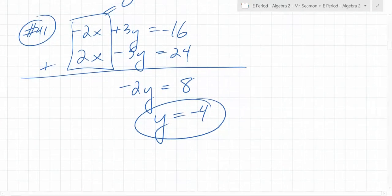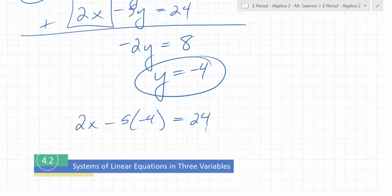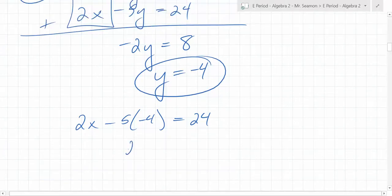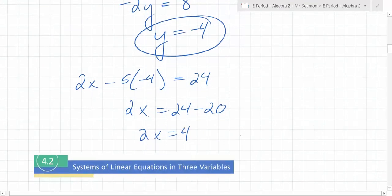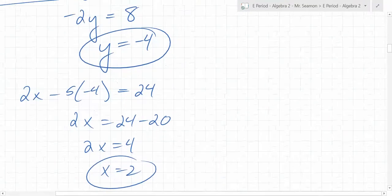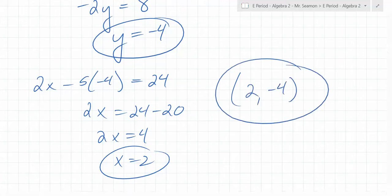What do you do once you get y equals negative 4? Plug it into either one. So 2x minus 5 times negative 4 equals 24. I end up with 2x equals 24 minus 20, so 2x equals 4, and x equals 2. So the answer is (2, negative 4). You could check this by plugging that point in.